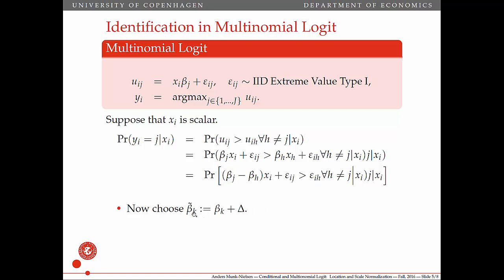Okay, so we can choose some other beta tilde here, where we just, for all of the k's, add some number. And then this thing in here is unchanged for all of those inequalities, as I'm writing here, because the deltas will cancel out. And then the statement is true for all the same values of x_i and all of the epsilons.